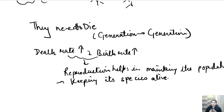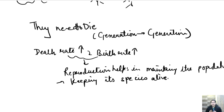We studied in Class 7 that in a food chain or food web, each and every trophic level or each and every species is playing its own important role. We also require lions, frogs, and ants — they all have their own role to perform. Similarly, maintaining the population of a particular species is very important for survival. If a species disappears from our earth or ecosystem, it will definitely affect our ecosystem. With the help of reproduction, the population is maintained and each species is also maintained.